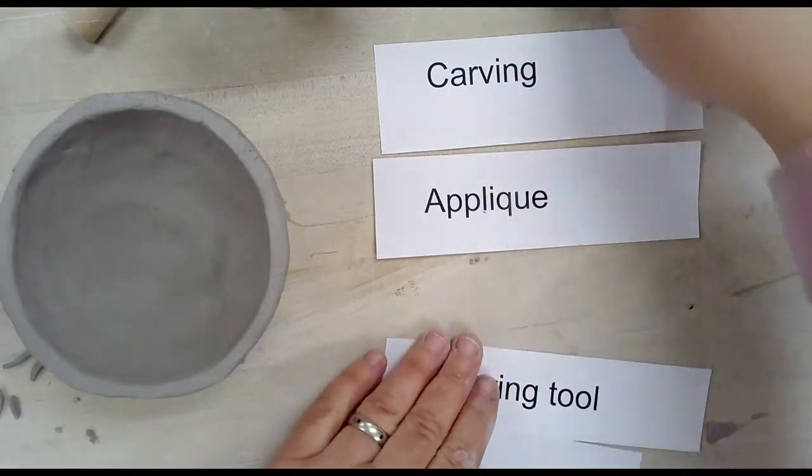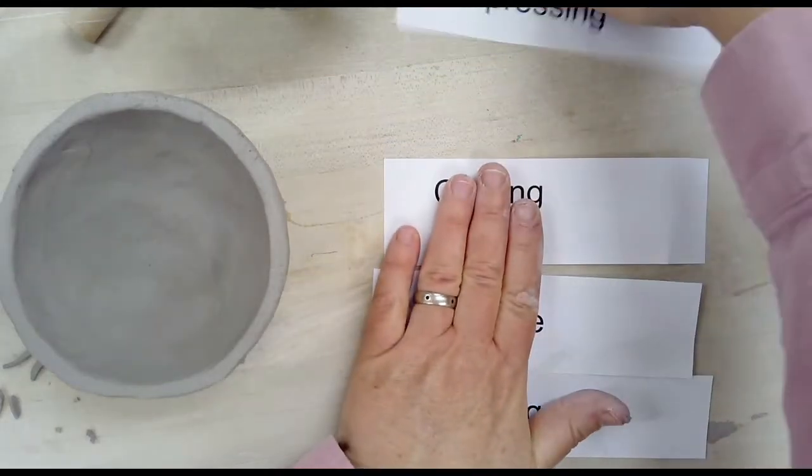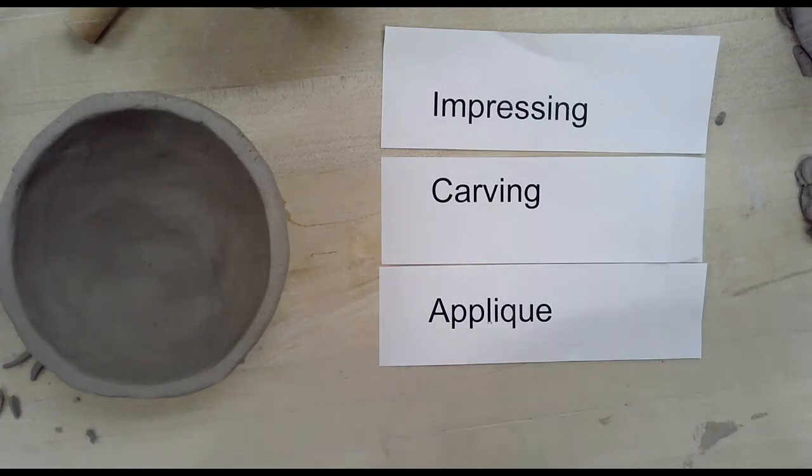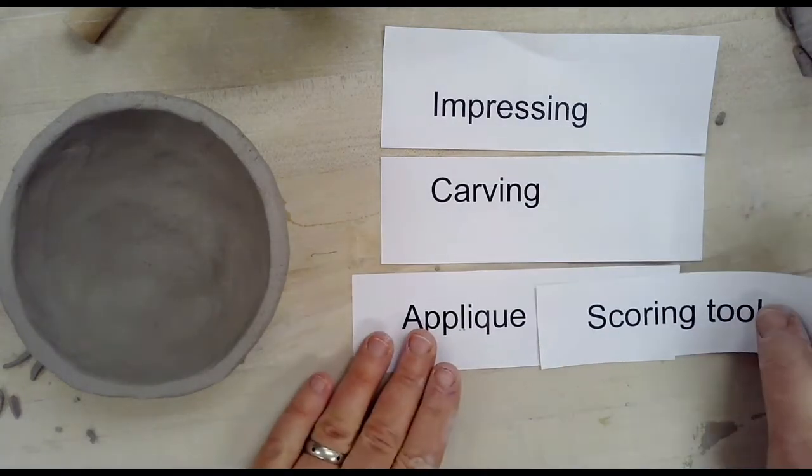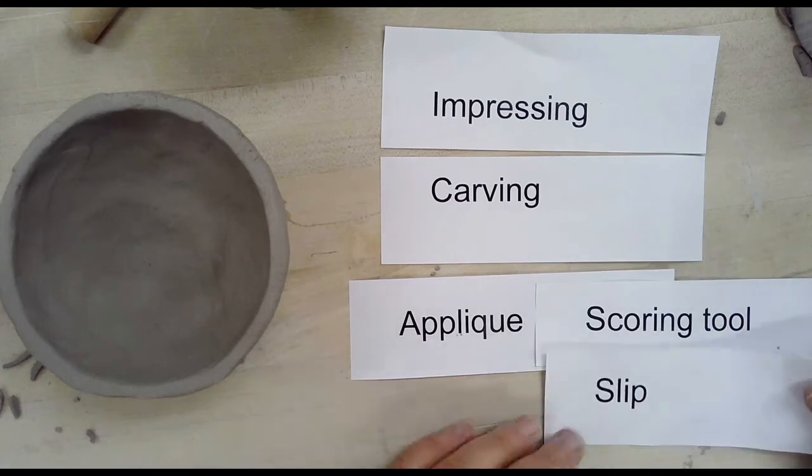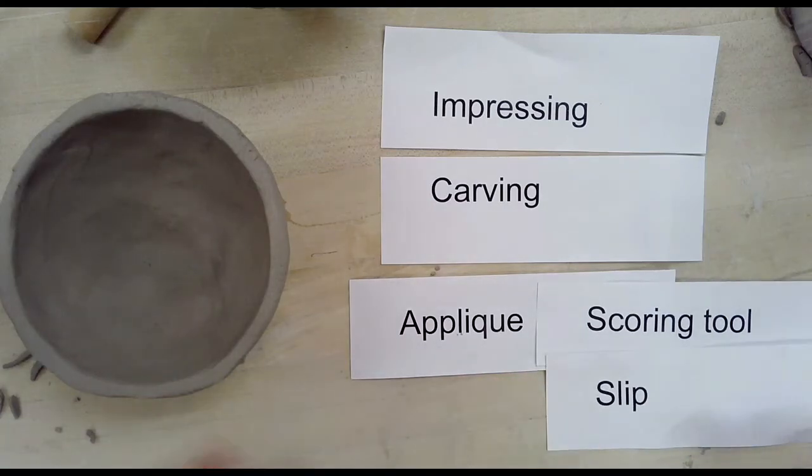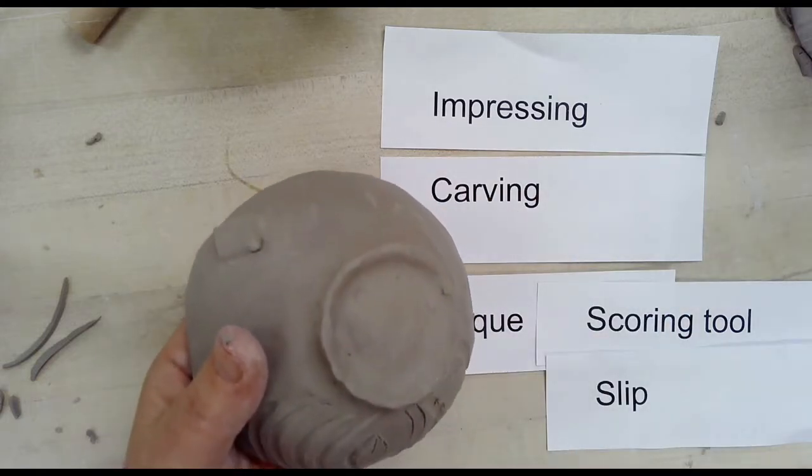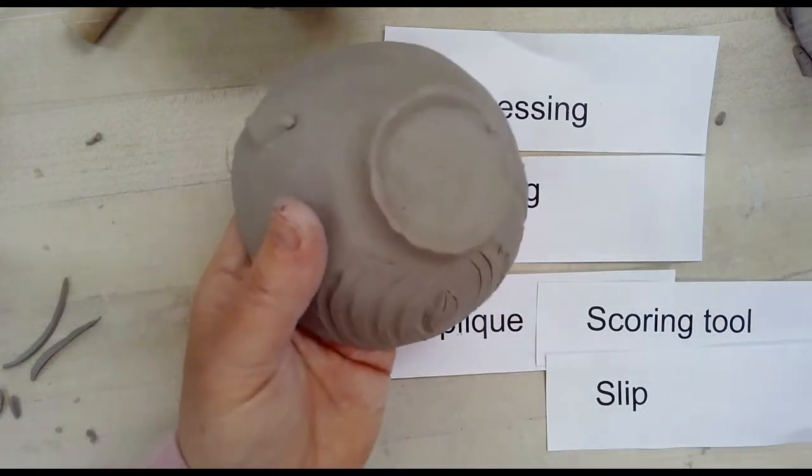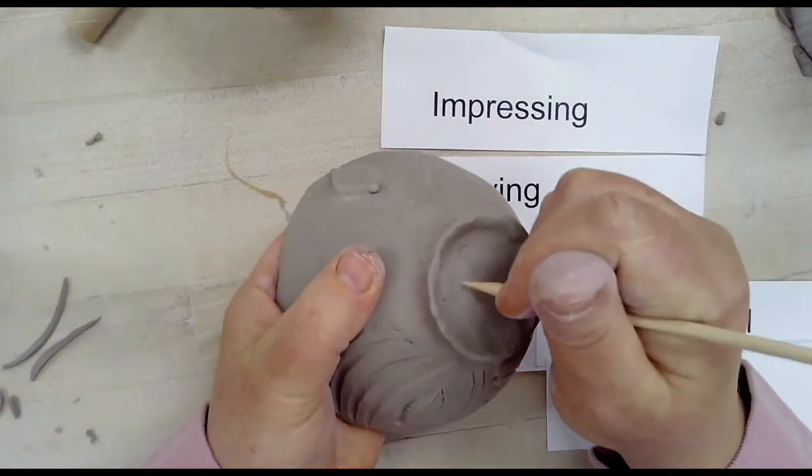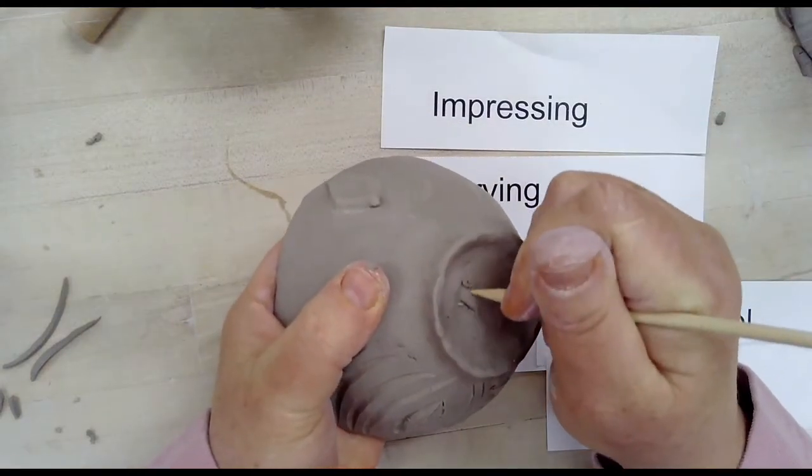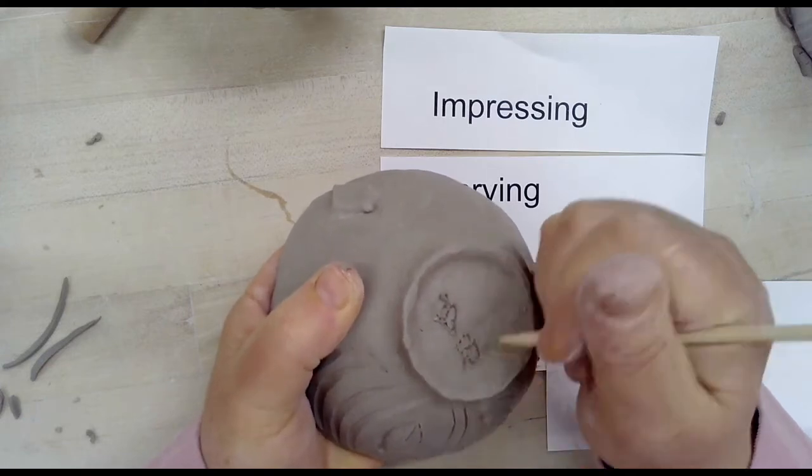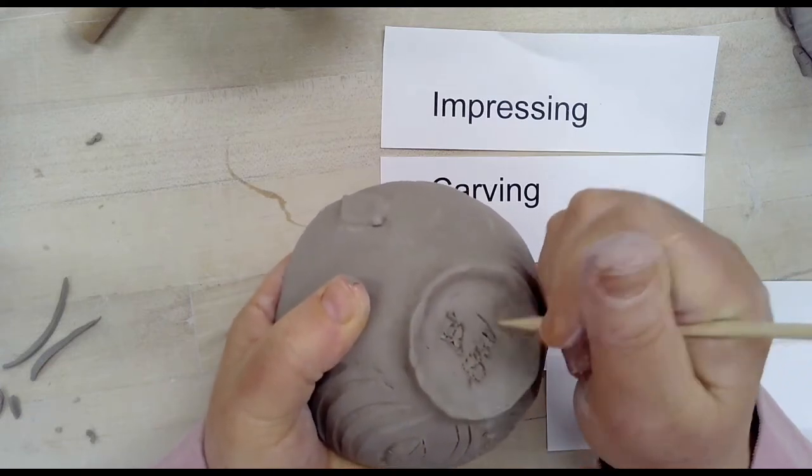So with these different techniques, whether you choose to use impressing when the bowl is plastic, carving when the bowl is leather hard, applique when the bowl is somewhere between plastic and leather hard, you will need to score and slip your surface. And then finally, very importantly, you will want to take that wooden stick tool and sign the bottom of your bowl in a way that is easily recognizable and will not fade.